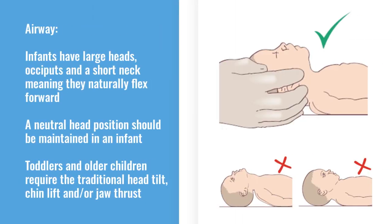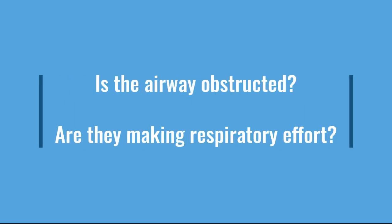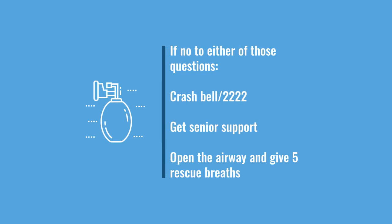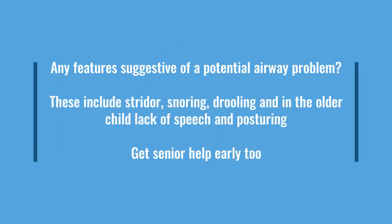A is for airway. The important thing to know with children is that their airways are of different size and their anatomy is different to adults. Small children have very large heads and very short necks, so you generally maintain a neutral head position rather than the traditional head tilt chin lift used in older children and adults. The key question is: is the airway obstructed? If the patient isn't breathing and there's no air movement at all, you need rapid escalation — get senior people there quickly.